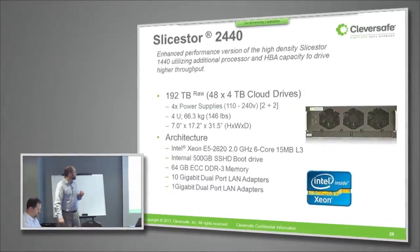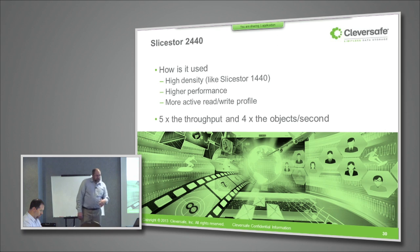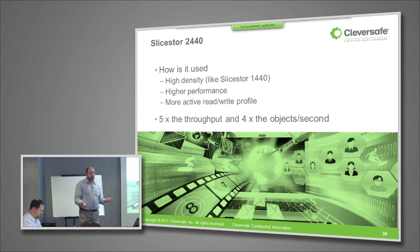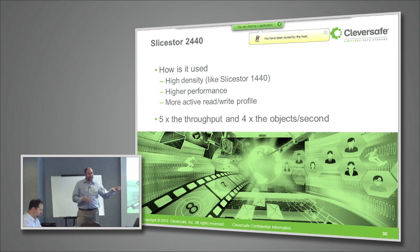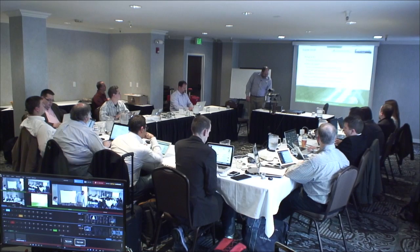The Slice Store 2440 is the high-capacity storage node like our Slice Store 1440, but in a higher performance version. It's still a 4U server with up to 48 four-terabyte drives. Customers could choose this instead of the 1440 if they have a more demanding performance workload or a more active read-write workload. They might use 1440s in one storage pool and 2440s in another. Compared to the 1440, this product has five times the throughput and four times the objects per second. It is more expensive, so it expands our price-performance range with higher performance options to address additional use cases.